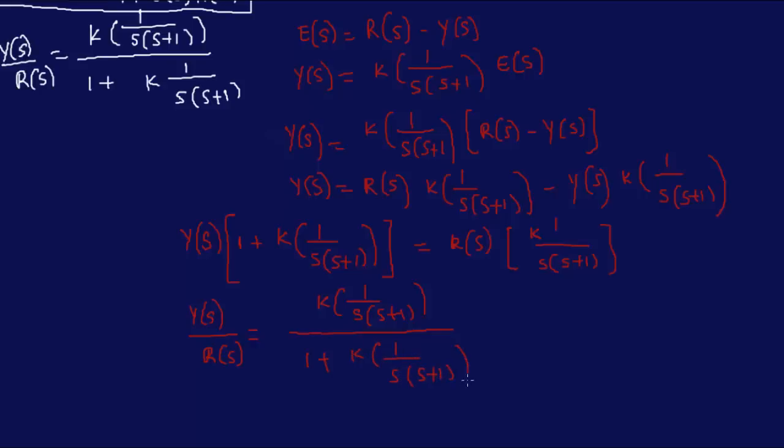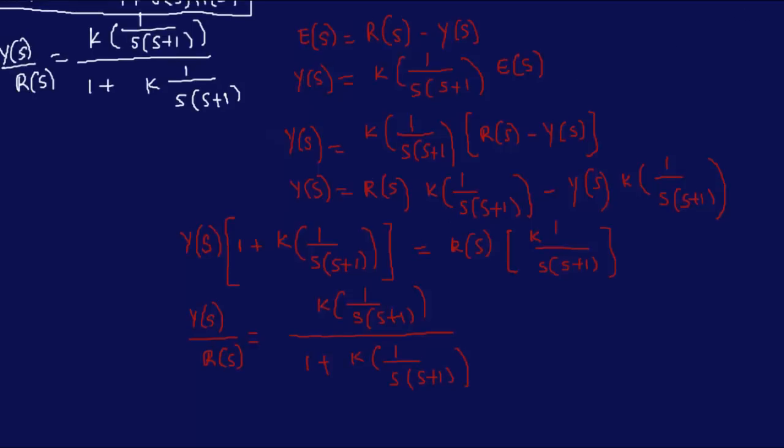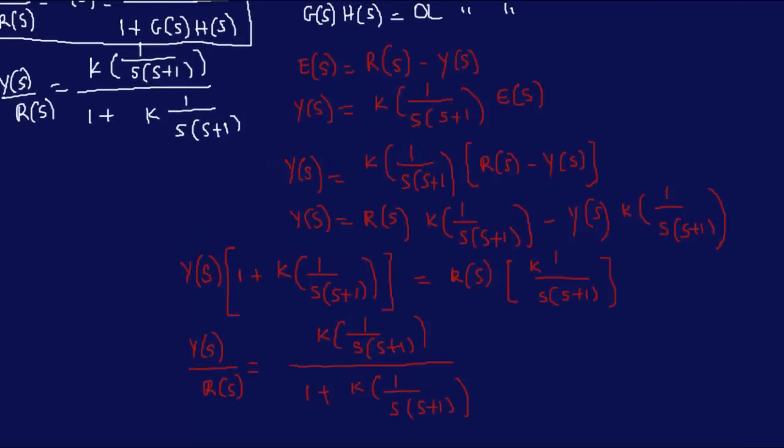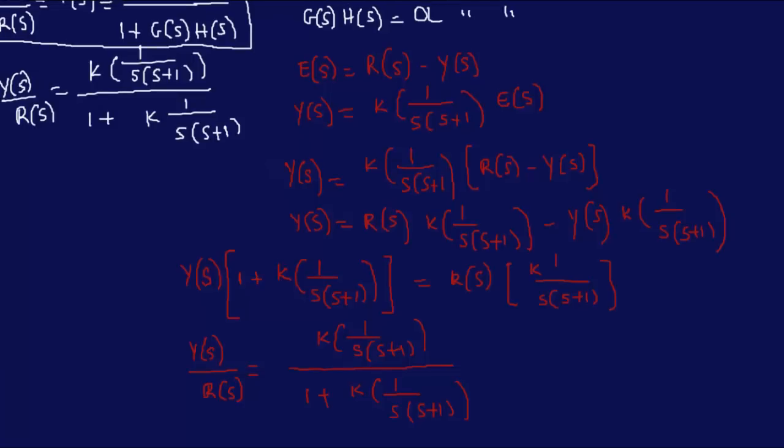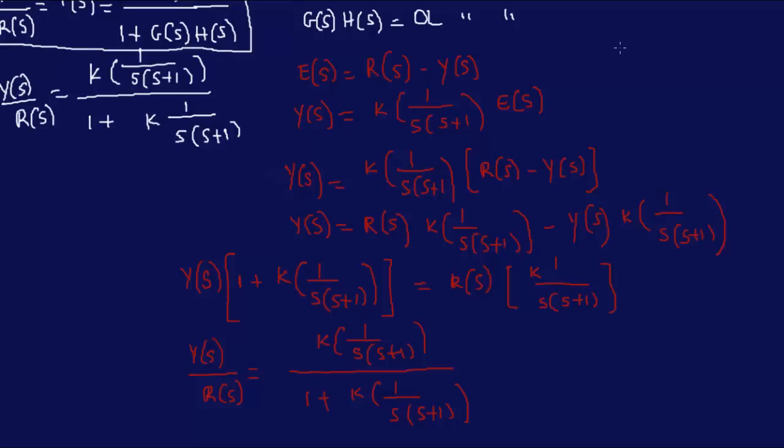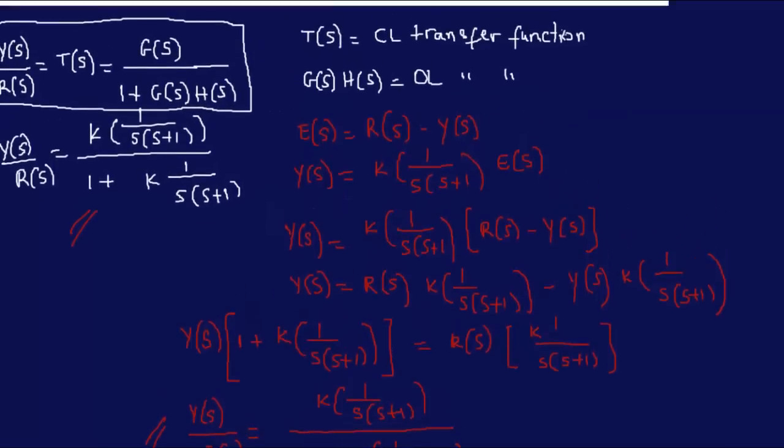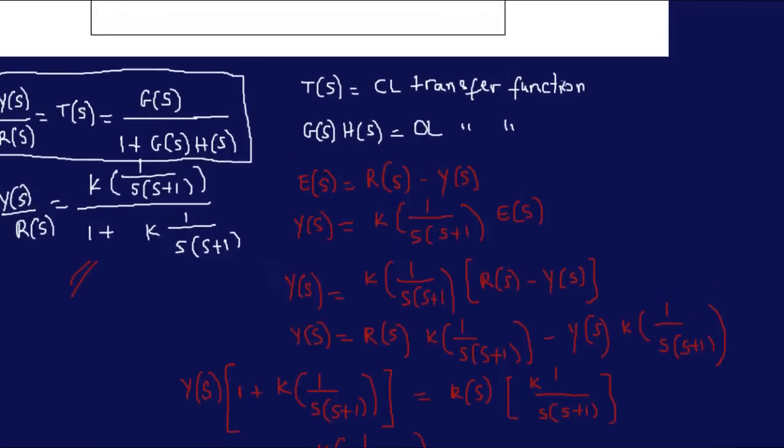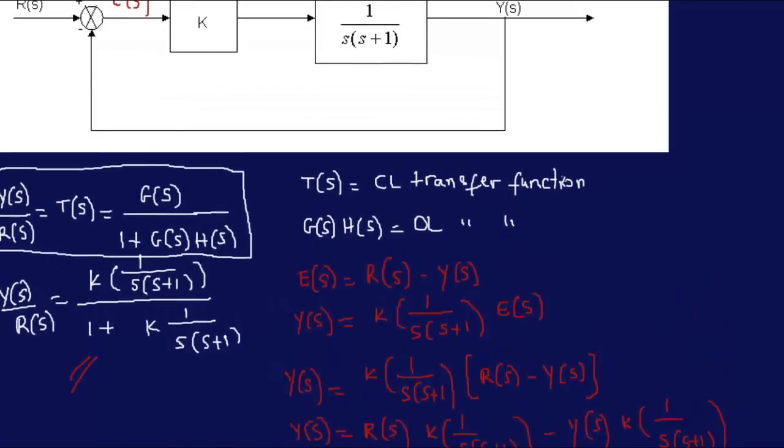So, that would be K over S, S plus 1 over 1 plus K over S, S plus 1. So, you see, that is similar to this over here. We just apply the formula straight and here we derive the formula from the block diagram. So, you see that it's exactly the same from here and here. If we have a typical control system like this with a feedback system...